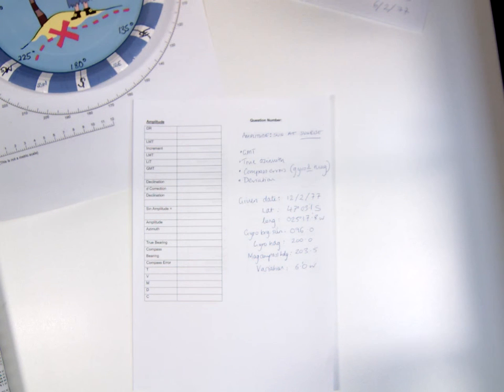We have a question here that asks us to find the amplitude of the Sun at sunrise. We're given some information that's going to help us do that. Specifically, we need to start by finding the GMT and then from there calculate the amplitude and the true bearing, and then find compass errors for the gyromagnetic compasses and the deviation.